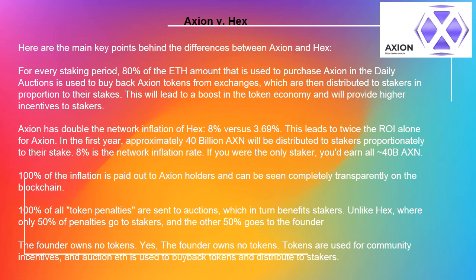100% of the inflation is paid out to Axion holders and can be seen completely transparently on the blockchain. 100% of all token penalties are sent to auctions, which in turn benefits stakers. Unlike HEX, where only 50% of penalties go to stakers and the other 50% goes to the founder.